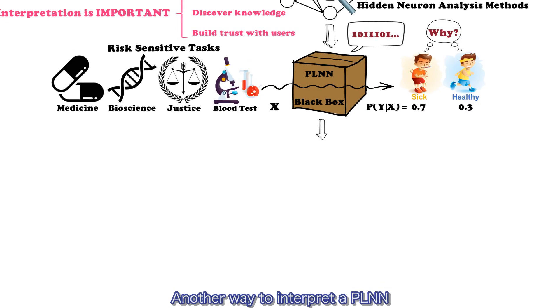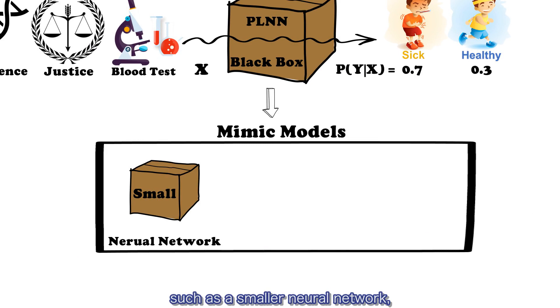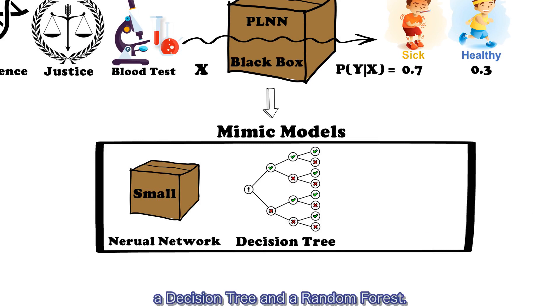Another way to interpret a PLNN is to build mimic models, such as a smaller neural network, a decision tree, and a random forest.